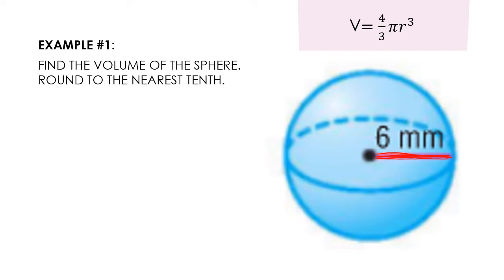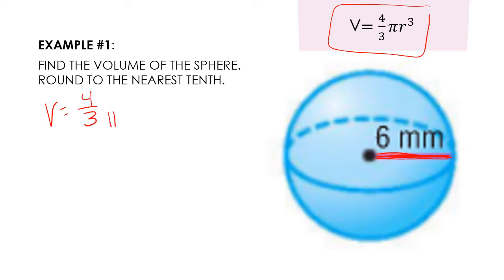We have two things that we need to remember: a radius and a diameter. Radius is half of your diameter. So realistically, all I need to do is substitute that number into my formula. My formula is volume equals four-thirds pi r cubed. Volume equals four-thirds pi, and your radius is six, so I'm going to substitute six in for the r.